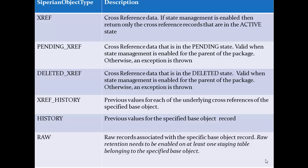Pending cross-reference: the cross-reference data that is in the pending state. It is valid when state management is enabled for the parent of the package; otherwise an exception will be thrown. Deleted cross-reference: this is for the deleted state record from the cross-reference, and it is valid only if state management is enabled for the corresponding base object. If state management is not enabled and you try to retrieve the deleted cross-reference, an exception will be thrown.